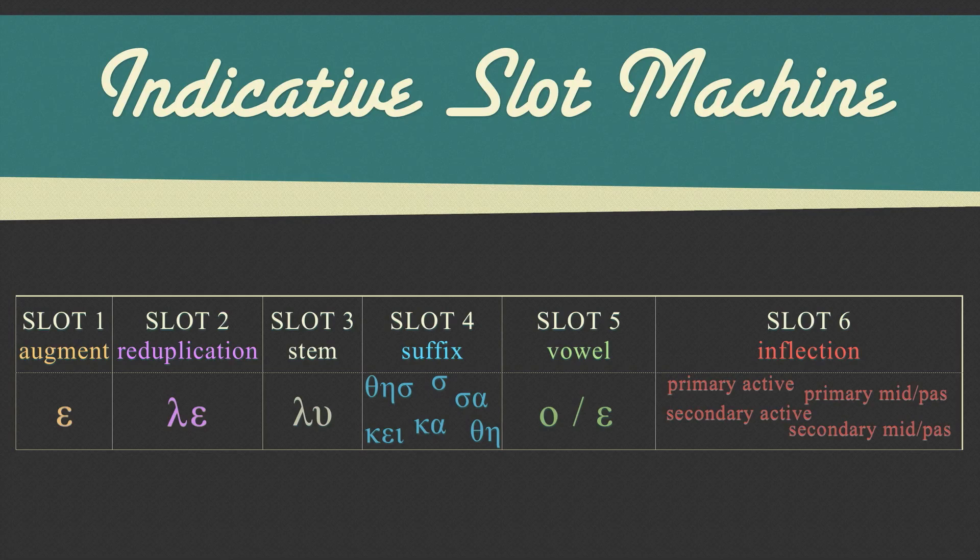Here's the key. Particular combinations of the slots in the slot machine form verbs in all their various combinations. We'll look at this in more detail in a few minutes.